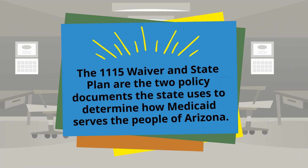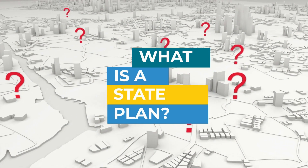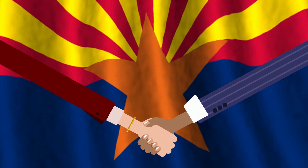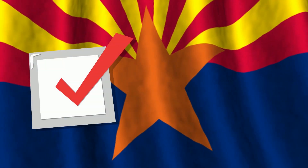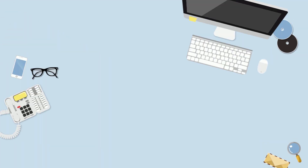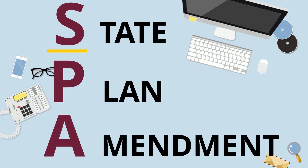The 1115 Waiver and State Plan are the two policy documents the state uses to determine how Medicaid serves the people of Arizona. The State Plan is an agreement between Arizona and the federal government that describes how the state runs its Medicaid program, including how it determines eligibility, which benefits and services it provides, and how providers are paid for services. As needed, ACCESS amends the state plan to add or change parts of Arizona's Medicaid program. These changes are called state plan amendments, or SPAs for short.